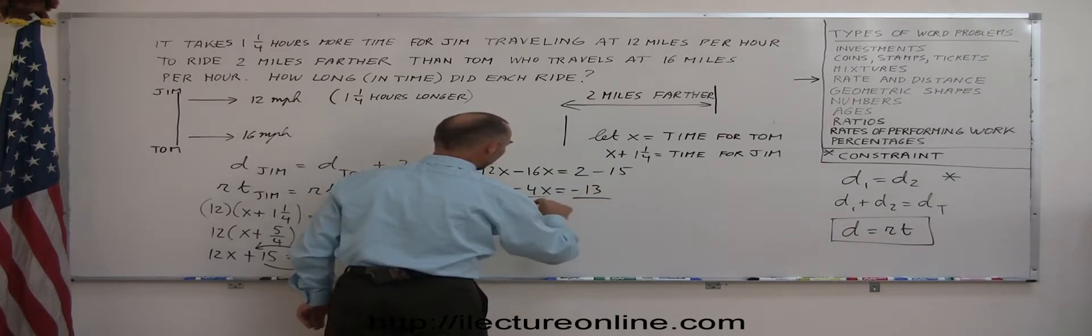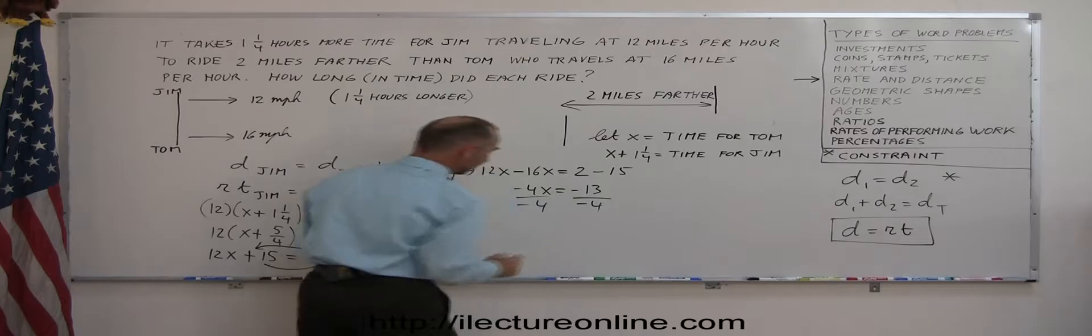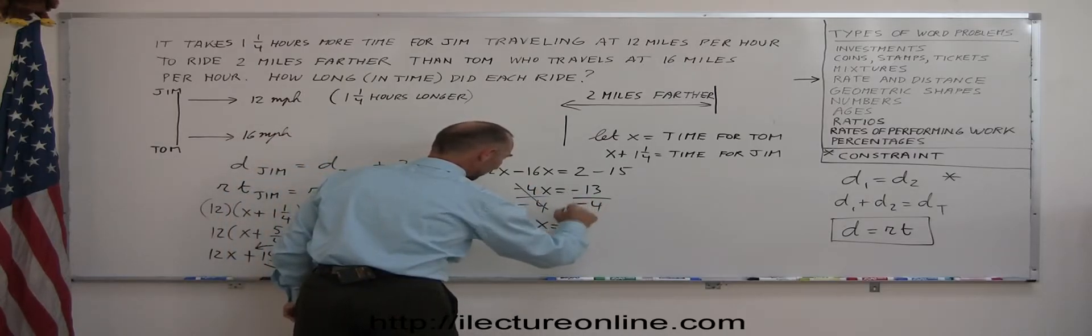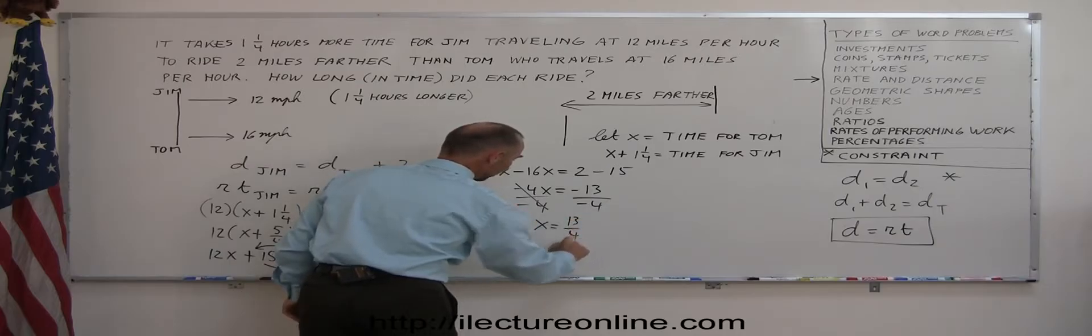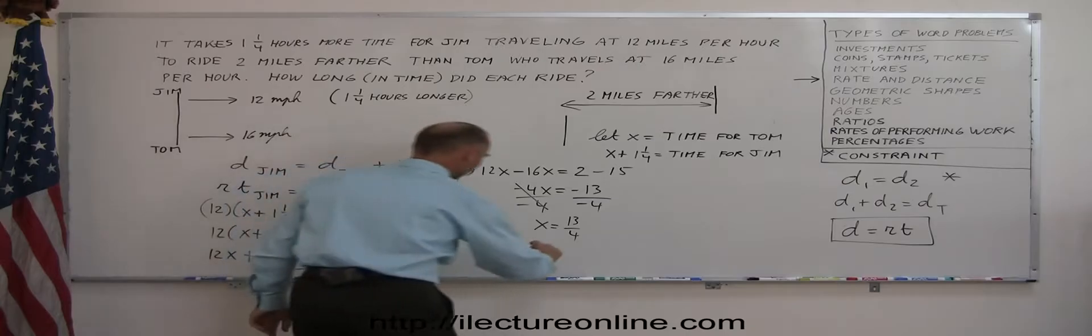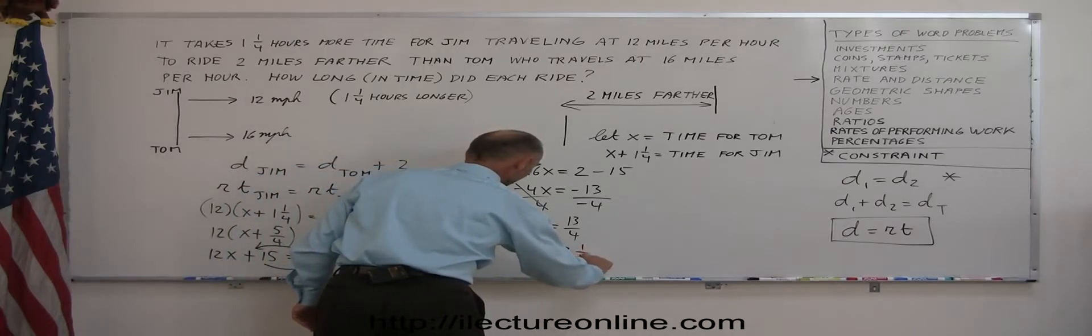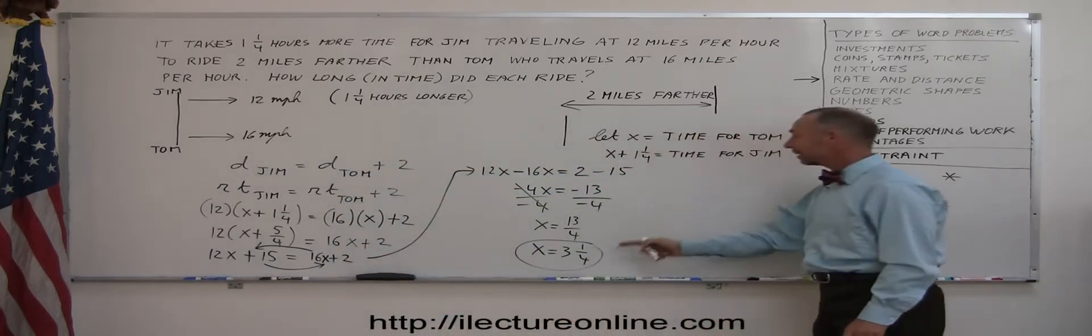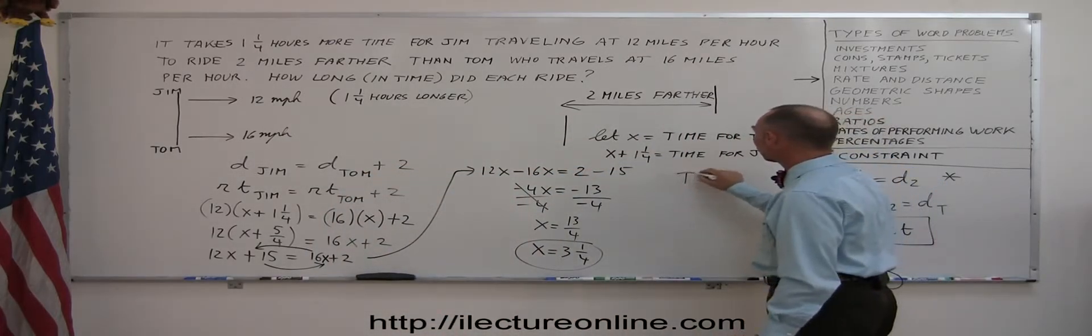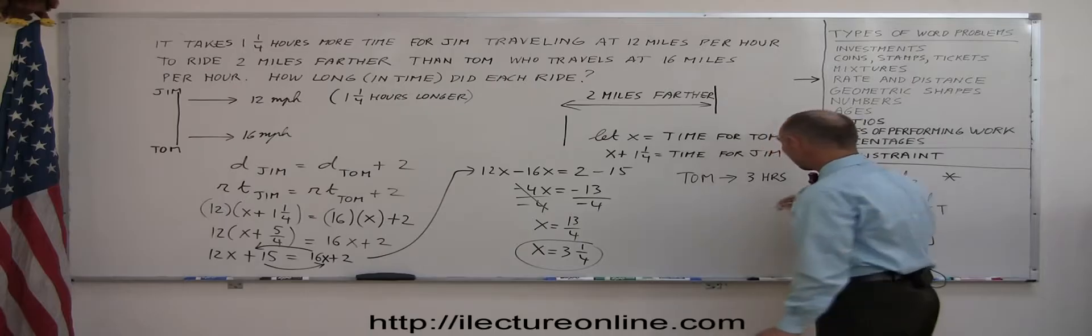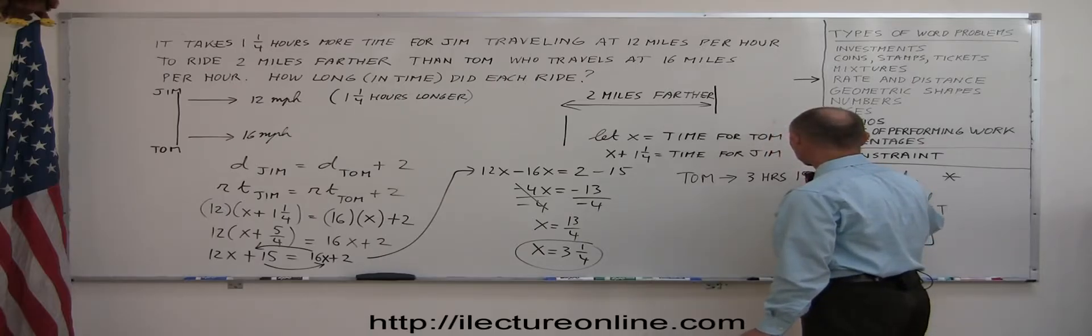Equals 16x plus 2. Okay, now we go ahead and move all the terms with x in it to one side. Oh, I forgot my x there. Can't do that. There it is. So I'm going to move all the terms with x to the left side, everything else to the right side. So I have 12x minus 16x when we move the 16 across and the 15 across there. It becomes a minus 15. Remember, whenever you cross the equal sign, the sign changes. So I have 12x minus 16x equals, we have a 2 on the right side, minus 15 when we move the 15 across.